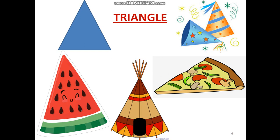Our next shape is triangle. Triangle has 3 vertices and 3 sides. We have triangular objects: a watermelon slice, a hut, a slice of pizza and a birthday hat. Have you ever celebrated a birthday? If you have, you will have a hat — the shape of the hat is a triangle. A pizza is round but its slice is triangular.